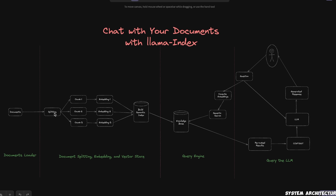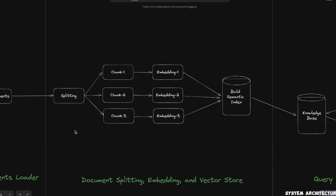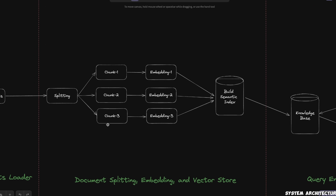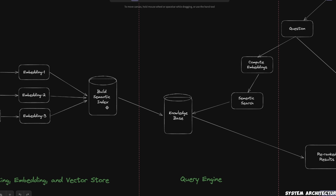You probably have seen this diagram before. There are different components. The first component is loading your documents. Then you want to divide your documents into smaller chunks with a predefined chunk size. For each of the chunks, you compute embeddings, which are numerical representations of the text contained in your chunk. Then you create a semantic index, which is basically your vector store.